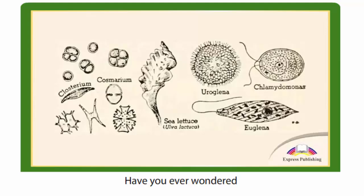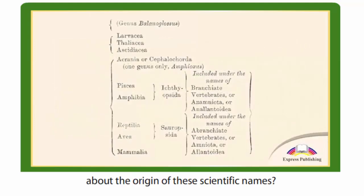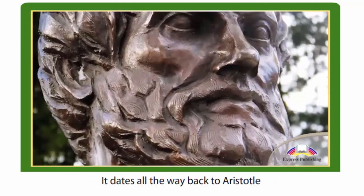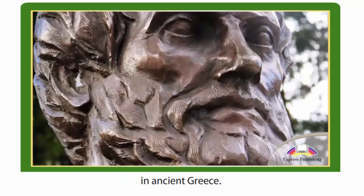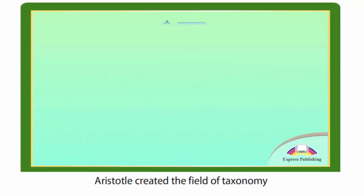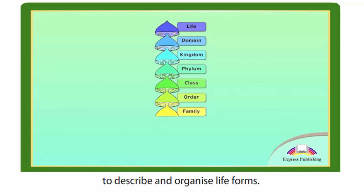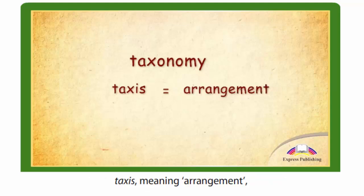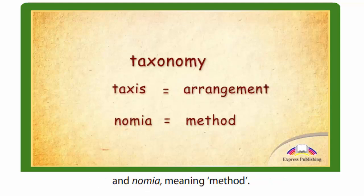Have you ever wondered about the origin of these scientific names? It dates all the way back to Aristotle in ancient Greece. Aristotle created the field of taxonomy to describe and organize life forms. The word comes from the ancient Greek words taxis, meaning arrangement, and gnomia, meaning method.